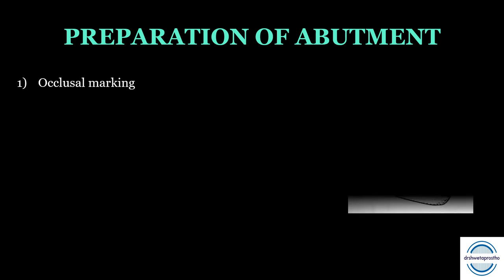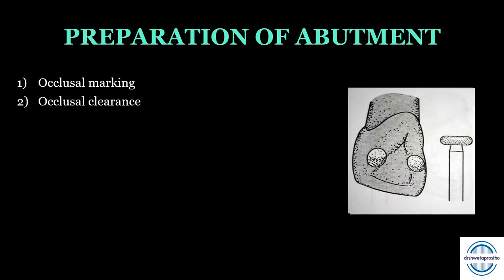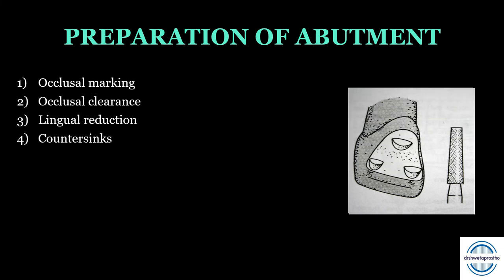Preparation of the abutment for resin bonded bridges: Step 1 — occlusal marking with articulating paper to mark centric occlusal contacts. Step 2 — occlusal clearance of 0.5 mm using a small wheel diamond point. Step 3 — lingual reduction of 0.5 mm with a small wheel diamond point, ending 1.5 to 2 mm from the incisal edge. Step 4 — countersinks: flat notches on the lingual surface made with flat-end taper diamond points to provide resistance to gingival displacement.